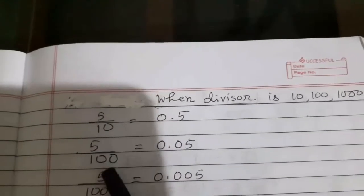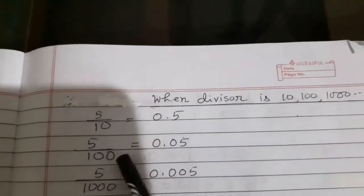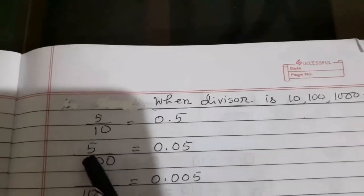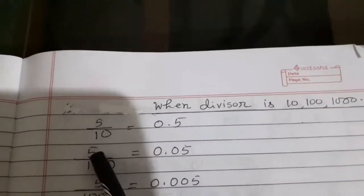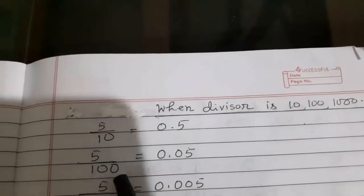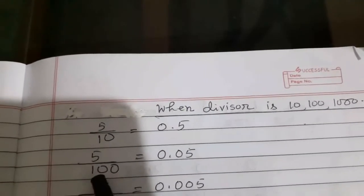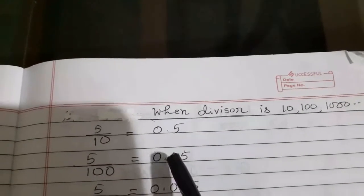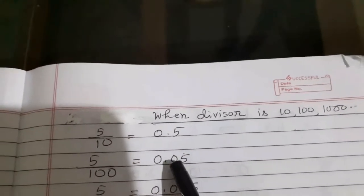5 by 100. Here two zeros, therefore point before two digits. But you see here only one digit. But we must put the point before two digits. Therefore now we put the zero here, left side of the number.